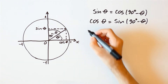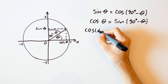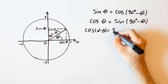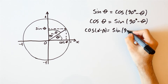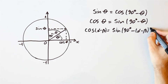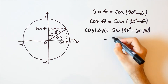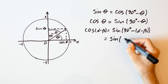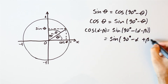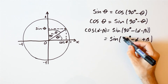That means that the cosine of alpha minus beta is equal to the sine of 90 degrees minus alpha minus beta, and that is equal to the sine of 90 degrees minus alpha plus beta, and we can put 90 degrees minus alpha in parenthesis.